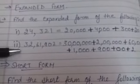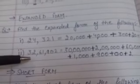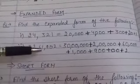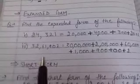Now, moving on to the next number which is 32,61,902. So, how will we expand this number?